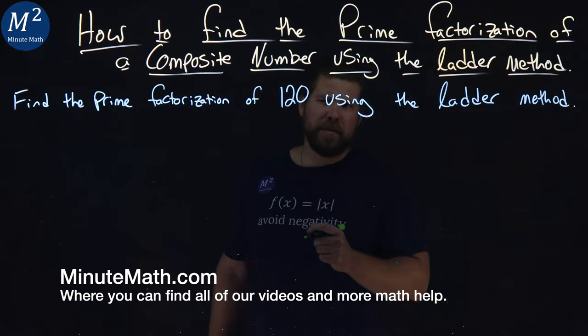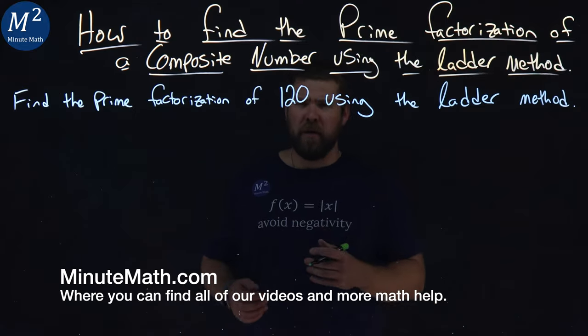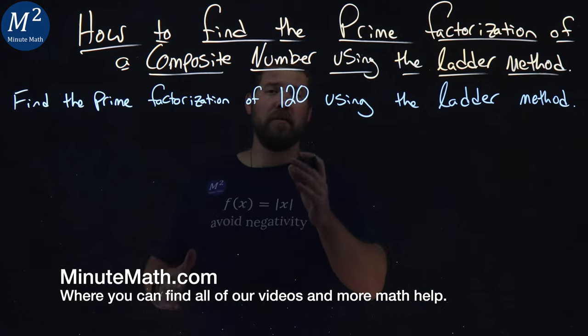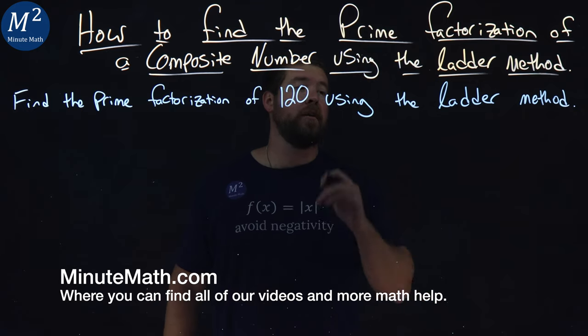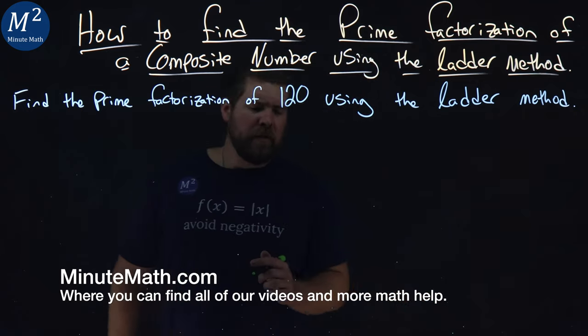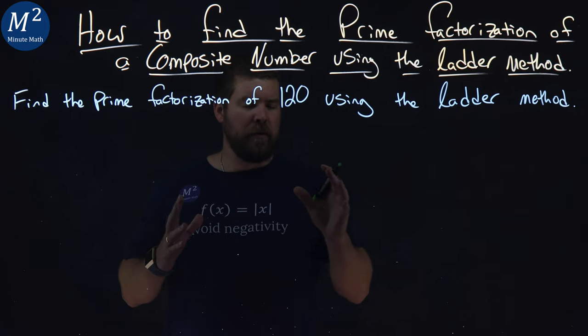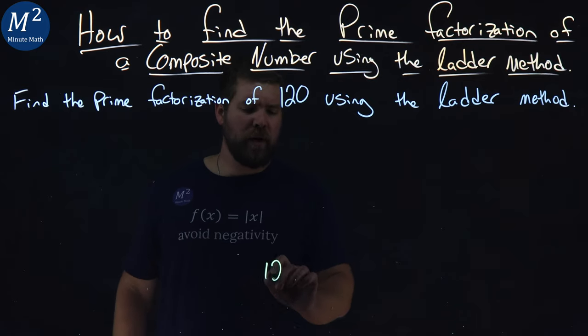The ladder method is a different method than I was used to growing up, but it's still a method out there. We're going to use that to find the prime factorization of 120. This one's a little difficult. Let's see how the ladder builds here. I'm going to start with 120 down here.